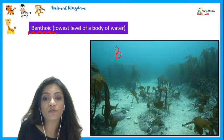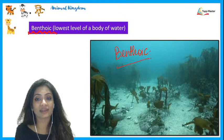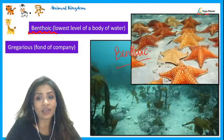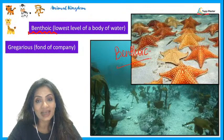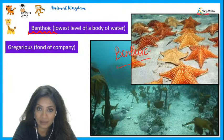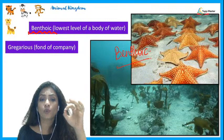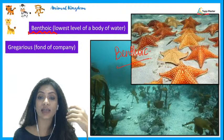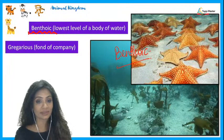Echinoderms are found at the lowest level of any body of water — always present near the sea bed. The word for an animal found at the sea bed is called 'benthoic.' When these animals are fond of having company around them, those organisms are said to be 'gregarious.' So two new words: benthoic means found at the lowest level of a body of water, and gregarious means fond of company.